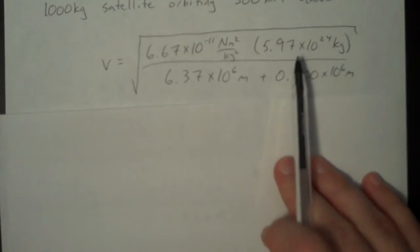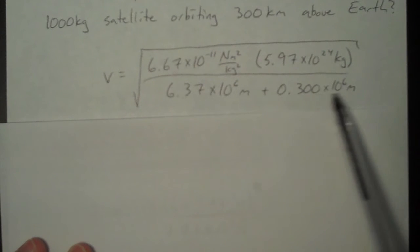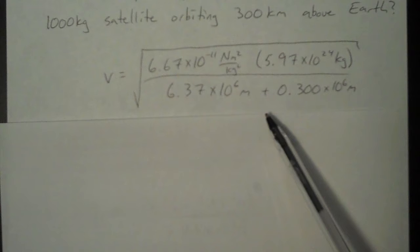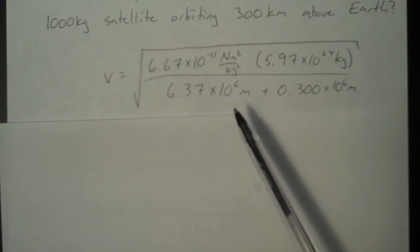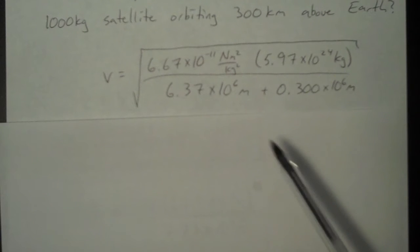This is the gravitational constant. This is the mass of the Earth. And this is the distance from the center. This is probably the only place that you could make a mistake. Remember, it's not just 300 kilometers you need to worry about. It is 300 kilometers plus the radius of the Earth.